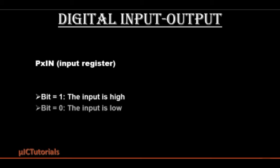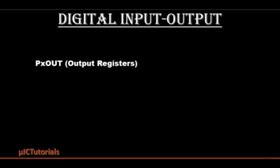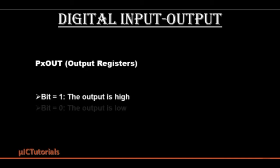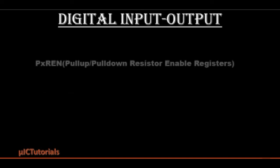If a pin detects a 0 signal, it means the input is low. The register PXOUT contains the data that is available to the outside pins. Each bit in each PXOUT register is the value to be output on the corresponding IO pin when the pin is configured as output direction. Writing a 1 will make the corresponding port bit high, and writing a 0 will make the corresponding port bit low.